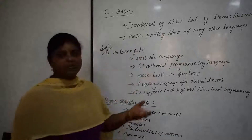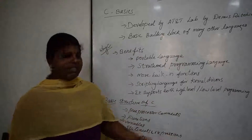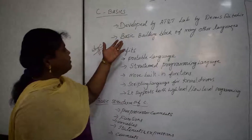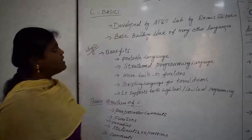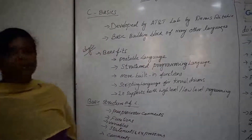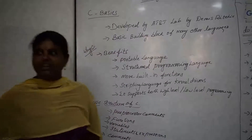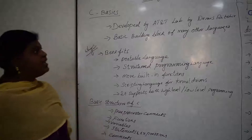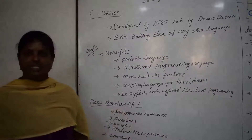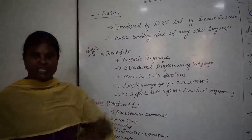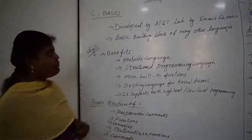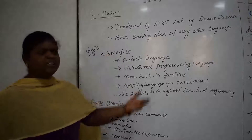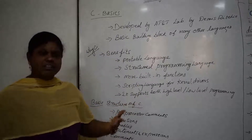C was first developed at AT&T. Dennis Ritchie first designed the code, and then many other languages followed from it.